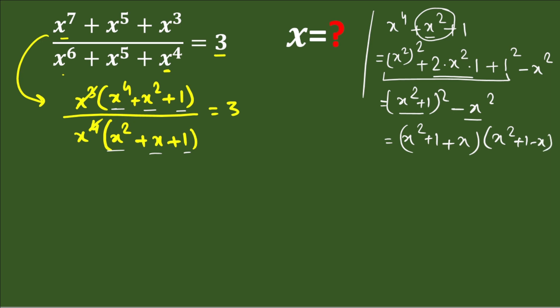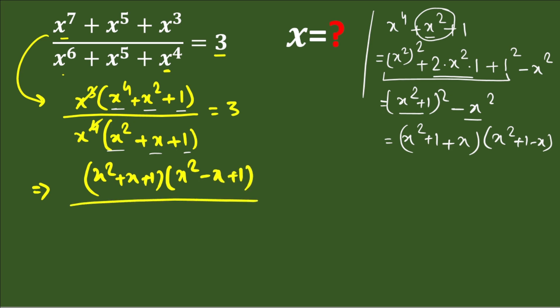Now, in place of the numerator we write it as (x² + x + 1)(x² − x + 1), divided by (x² + x + 1). The x² + x + 1 in the numerator cancels with the denominator value x² + x + 1.